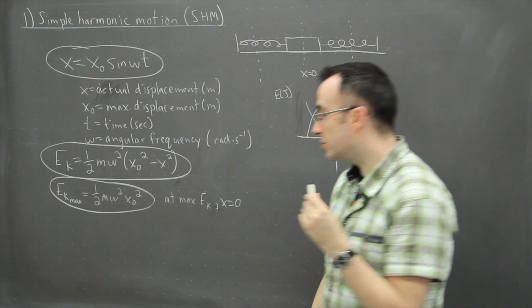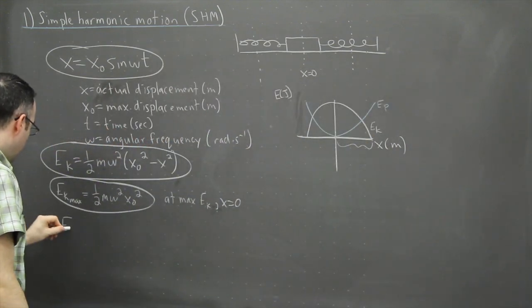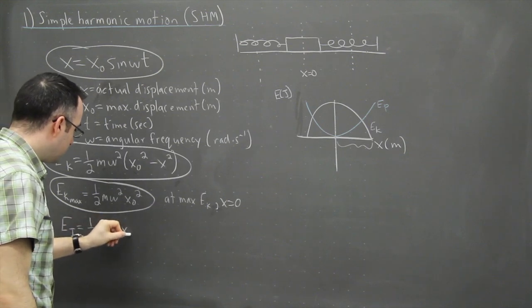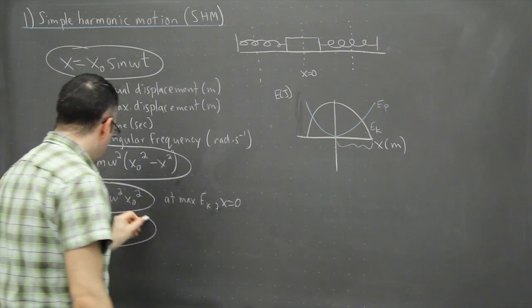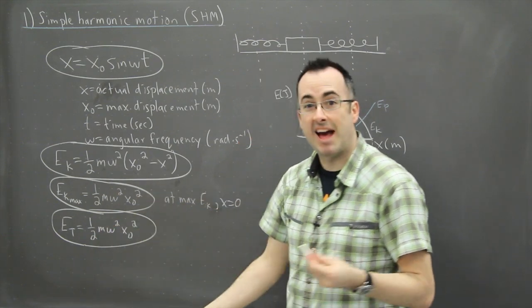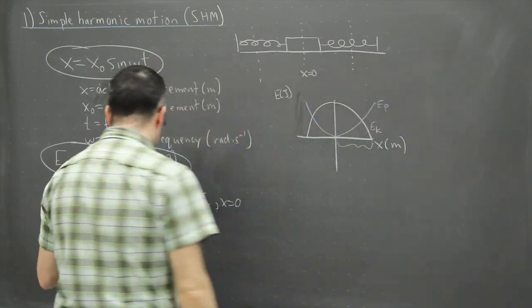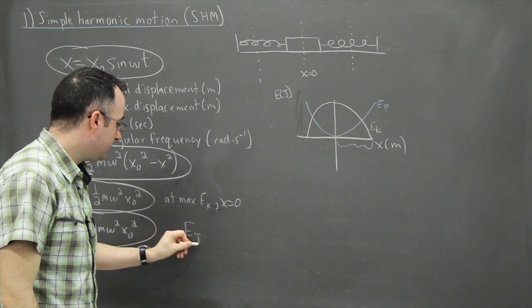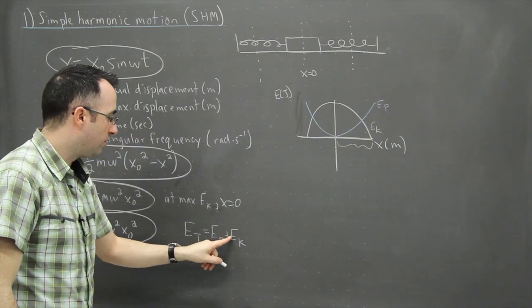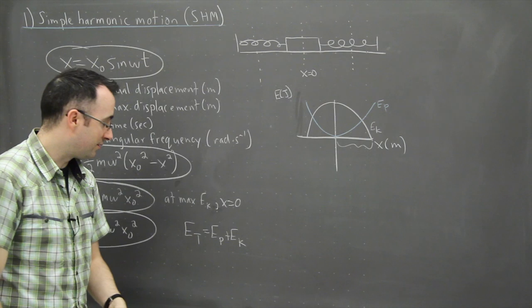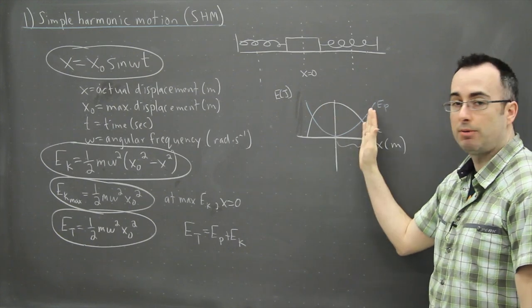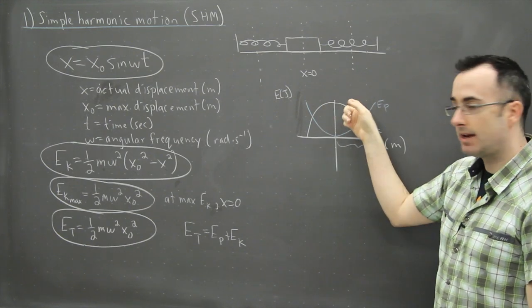The last equation tells you about the total energy. The total energy is just one half m omega squared x₀ squared — which you might think is the same as the maximum kinetic energy. The total energy ET is just equal to the potential plus the kinetic. So at any given x, you add up the potential plus the kinetic energy at that position.